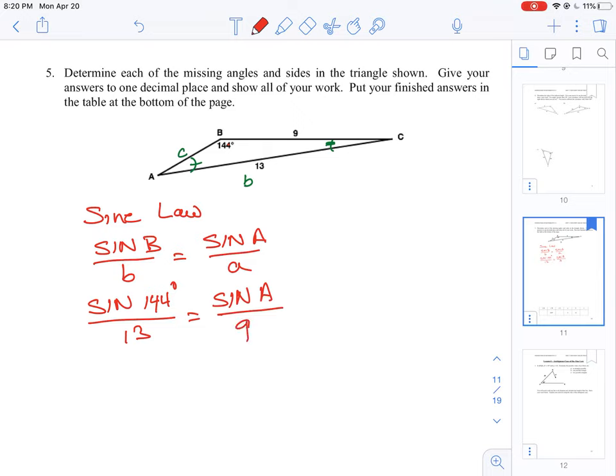Okay, so the simplest way to do this is just to cross multiply and we're going to isolate sine A. So I can rewrite this as sine A is equal to 9 times sine of 144 degrees all over 13. So it's a simple ratio. It will come out to equal 0.4069, that's what sine A is.